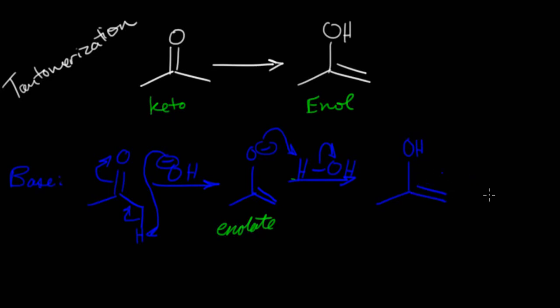And just for the sake of learning, it might be nice to note that we have successfully regenerated our catalyst, which is just hydroxide. And so we see that we started with a keto, and we ended with our enol. And this is just for our base-catalyzed tautomerization.